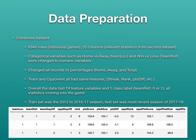Win versus loss, which was my class label, I changed to numeric: zero for a loss, one for a win. I also changed all the records to a percentage — home, away, and total — representing the percentage of games won. For both the team and opponents, I made sure they all had the same features: their current streak, their current rank, and their current point differential going into that game. Overall, this data had 19 different feature variables and one class label — team result, win versus loss — and all statistics reflected what the team had achieved coming into the game.